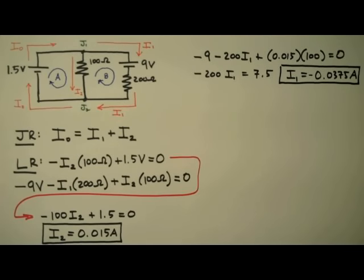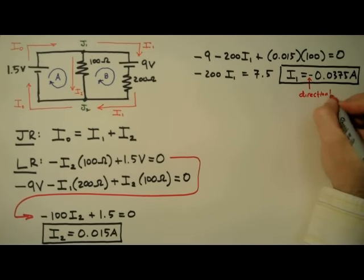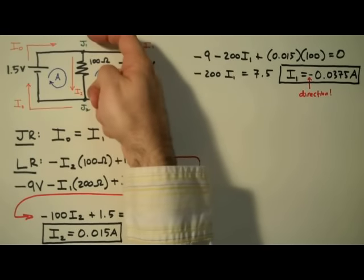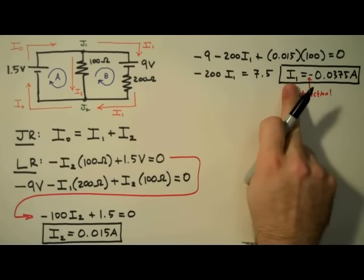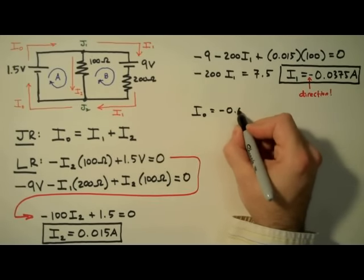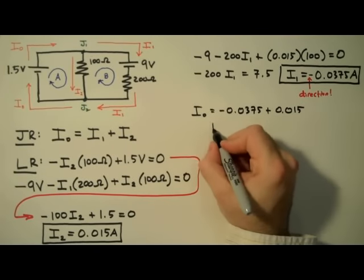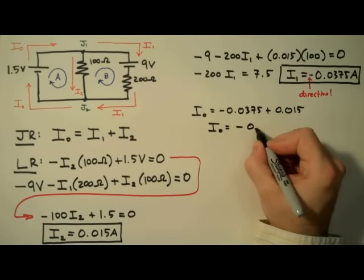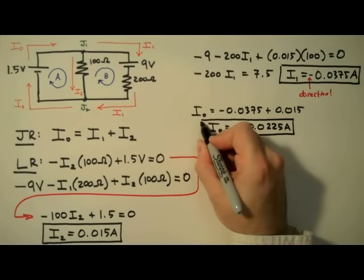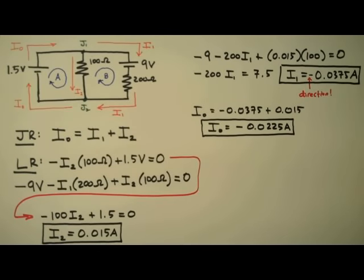What does this negative sign tell us? This negative sign tells us that the direction we chose for I1 is the wrong direction. Remember how we picked it arbitrarily at the beginning of the problem? Here's where we find out that the actual direction of positive charge flow is the other way. No harm, no foul — now we know the correct direction of the currents. So we're going to take I1 and I2 and plug them into the junction rule to determine I0. I0 equals negative 0.0375 plus 0.015, so I0 equals negative 0.0225 amps, or negative 22.5 milliamps. Again, this negative sign tells us the direction we assigned for the current is the incorrect direction of positive charge flow — it's actually moving the other way.